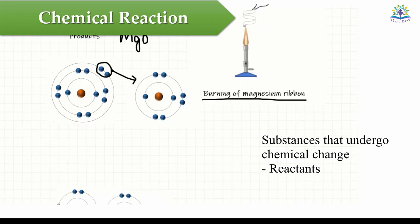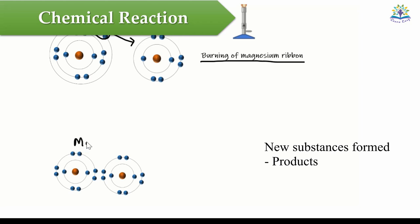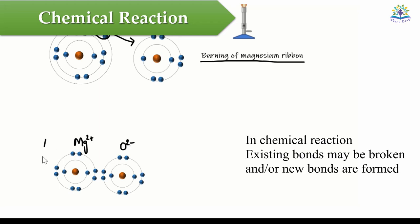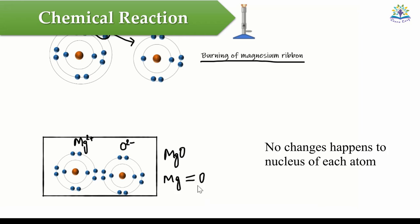The substances that undergo chemical change are known as reactants and the new substances formed are known as products. Here, existing chemical bonds may be broken and or new chemical bonds may be formed. In a chemical reaction, there is change involving electronic configuration but there will be no change to the nucleus.